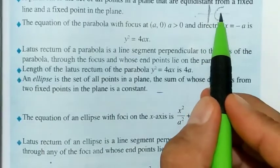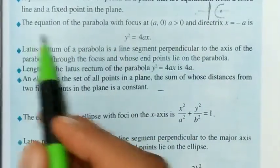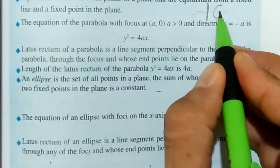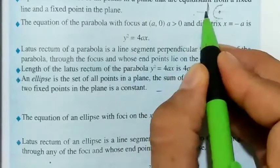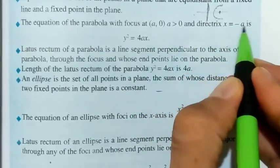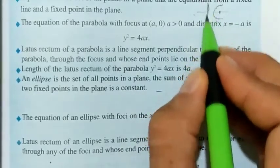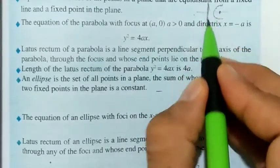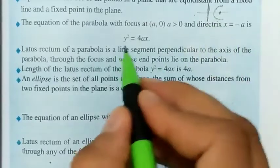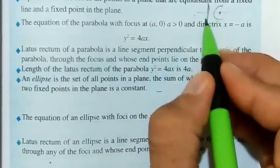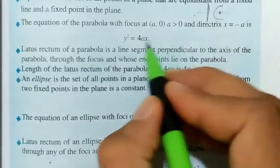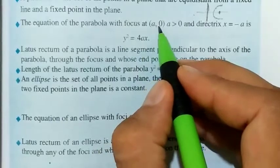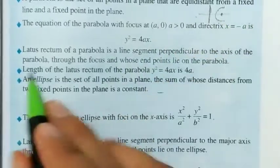The equation of the parabola with focus at (a, 0), where a > 0, and directrix x = −a is given by y² = 4ax. This is the standard form of the parabola, where a is the x-coordinate of the focus point (a, 0) with a greater than zero, meaning it opens to the right.